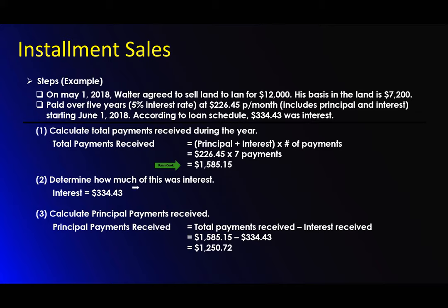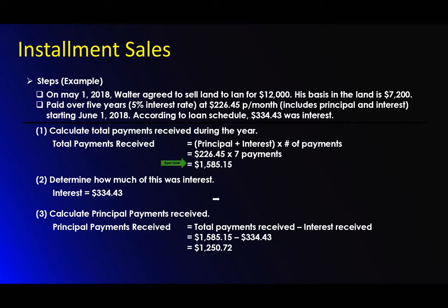How much was interest? We know according to the loan schedule, $334.43 was interest. So calculate the principal amounts received: total payments received minus the interest received — $1,585.15 minus $334.43 — which gives us $1,250.72.